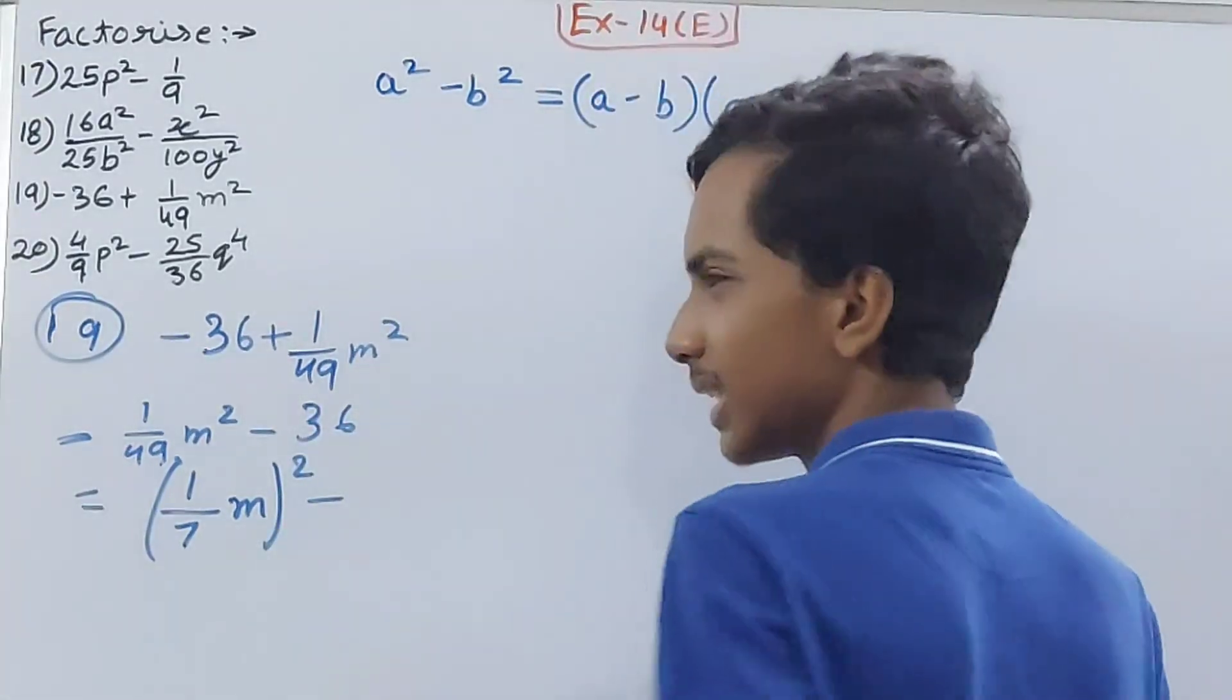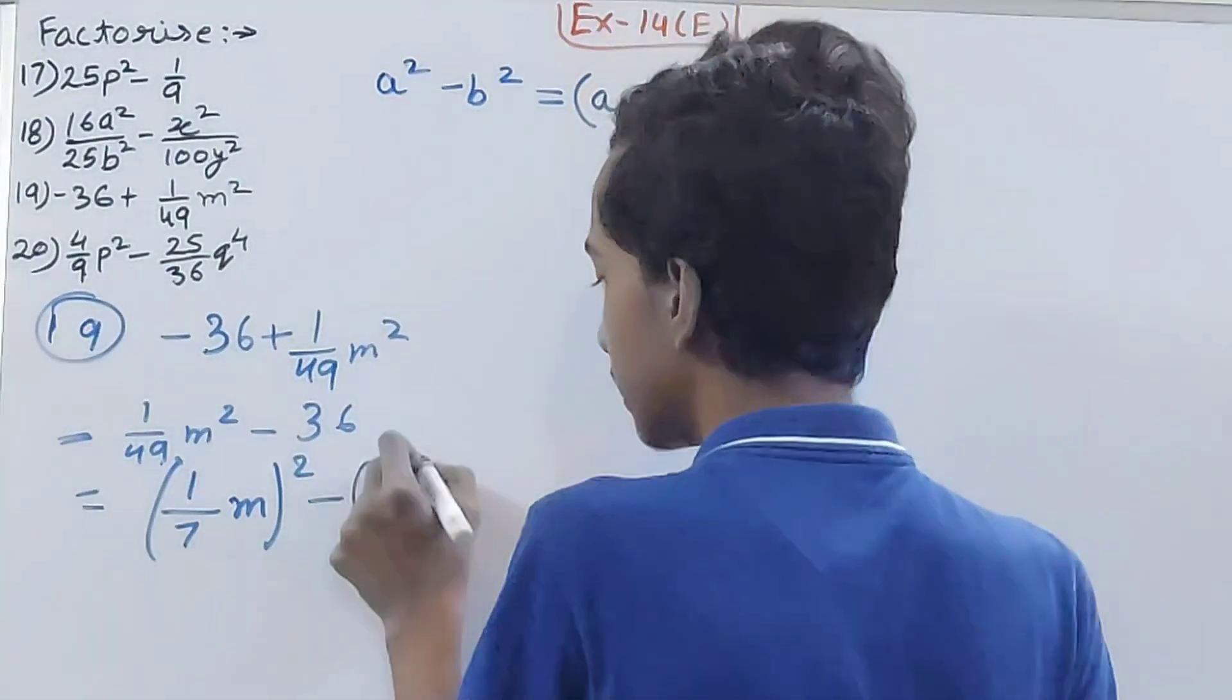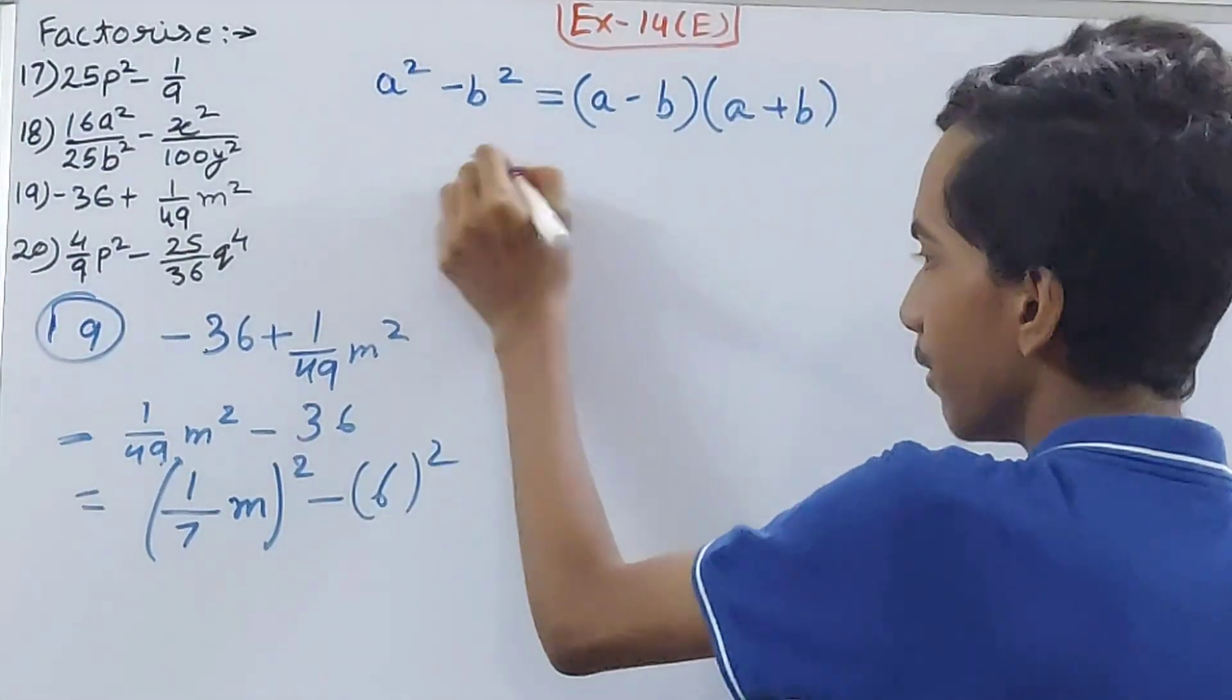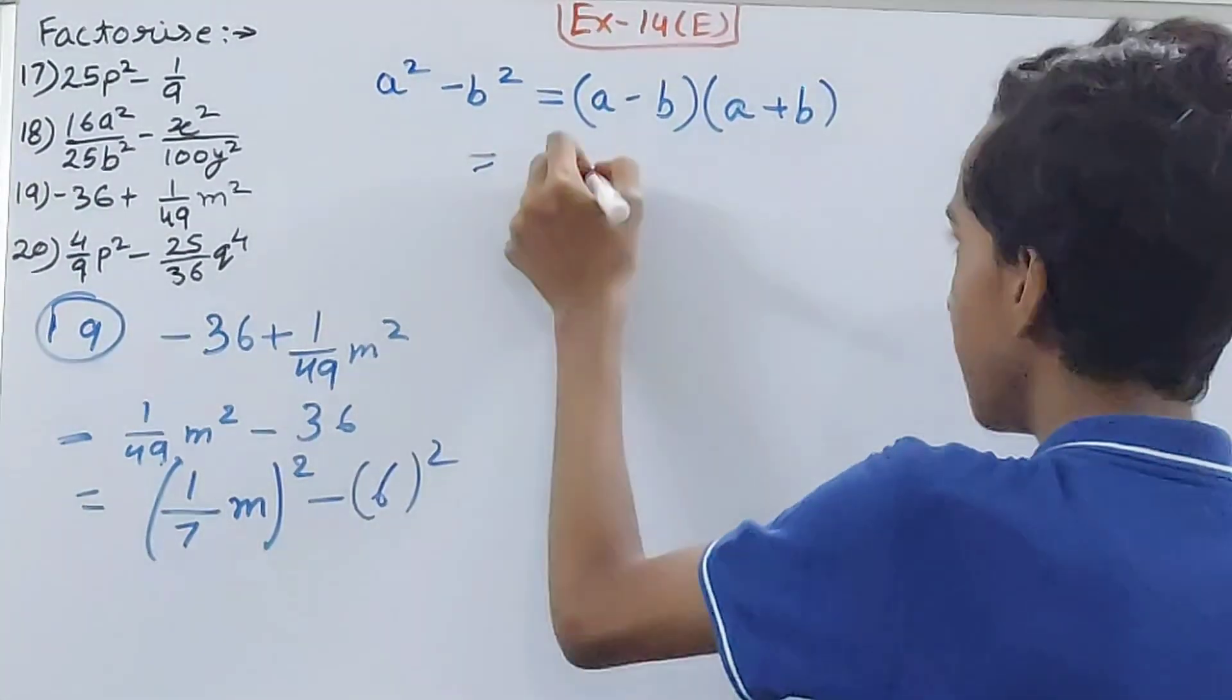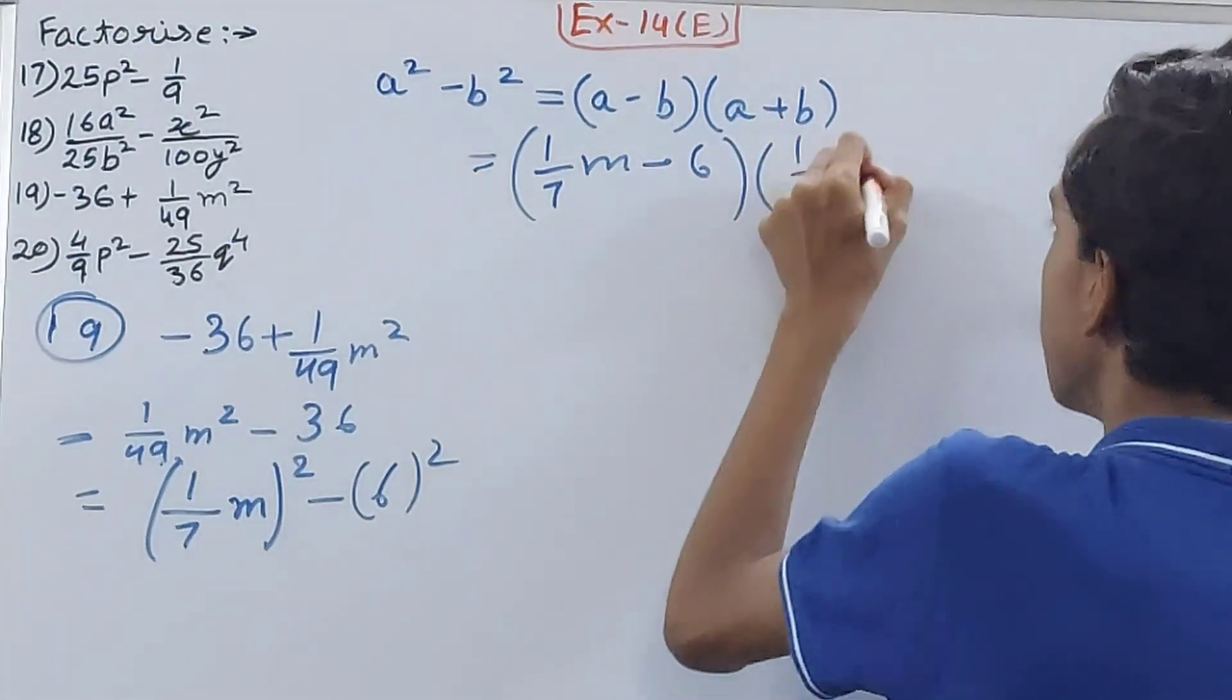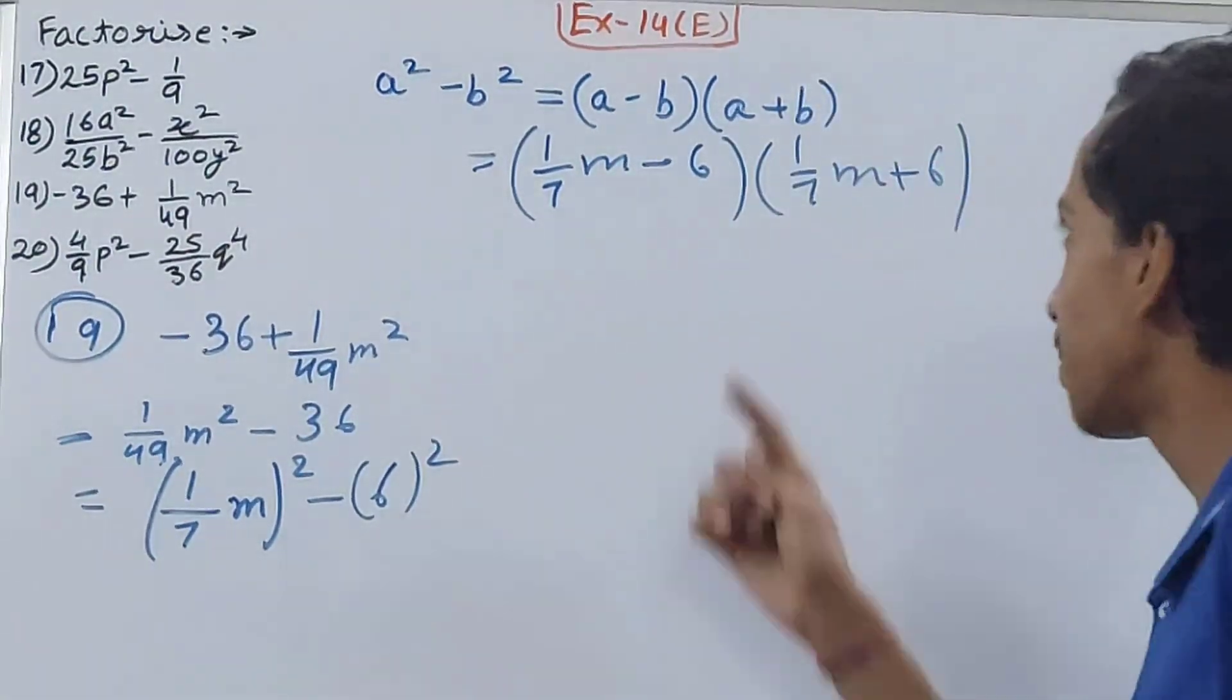So here you will have 6². Now further simplify this, you will have (1/7m - 6)(1/7m + 6), which becomes your final answer. You can write it as m/7, it doesn't matter. It's the same thing.